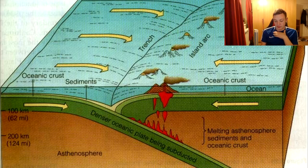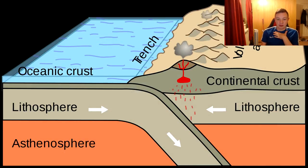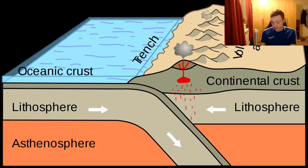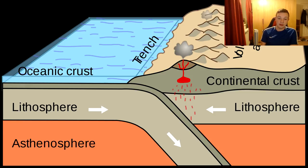This is very similar to continental volcanic arcs, which happen by the same process. The only difference is that a continental plate subducts under the oceanic plate and volcanoes pop out on the edge of the continent instead of out of the sea.